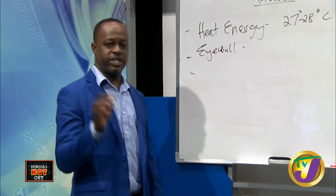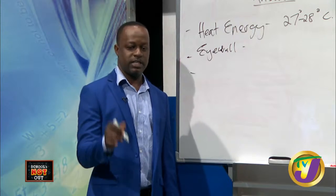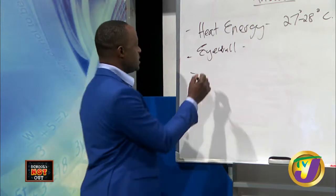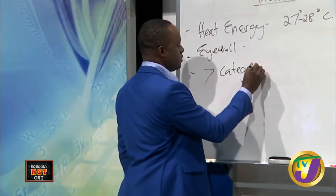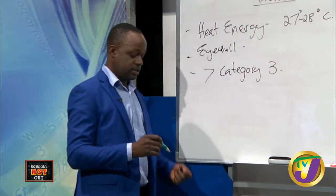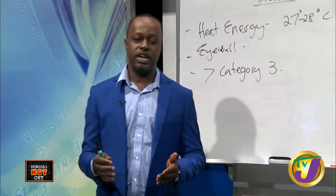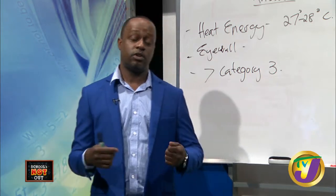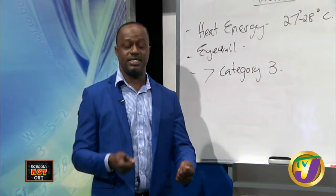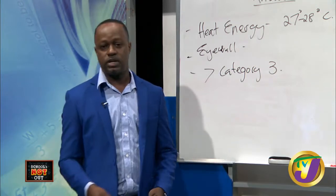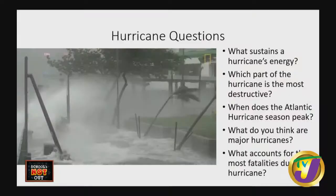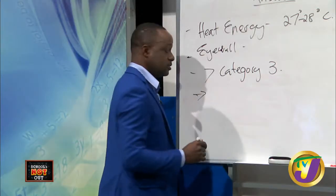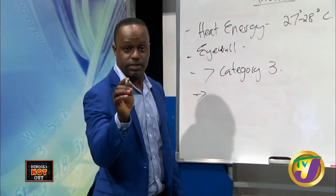What are major hurricanes? The video implied it - major hurricanes are those above category 3. They have the destructive capacity to cause extensive damage to buildings, crops, and livelihoods. And what accounts for most fatalities during a hurricane? Storm surge - storm surge is what accounts for the most fatalities.